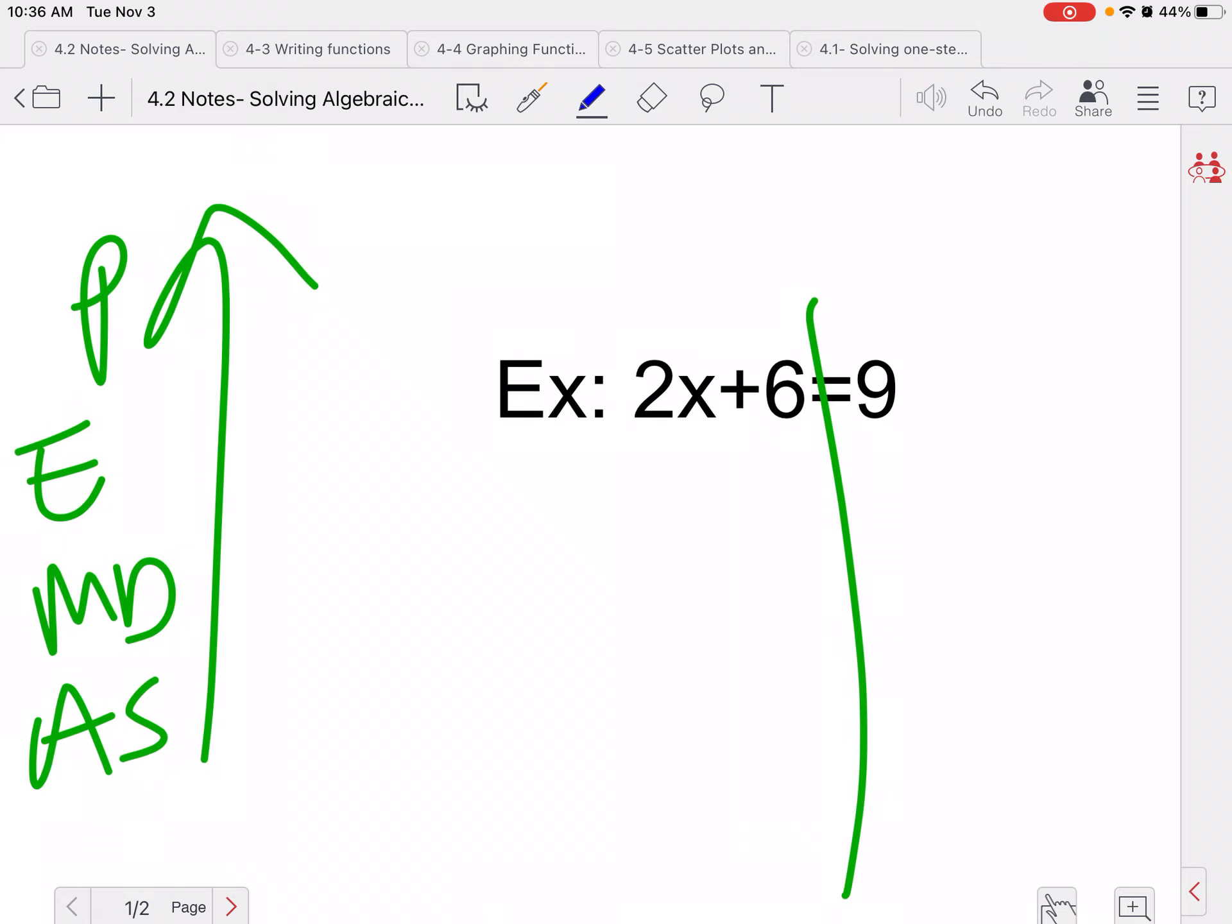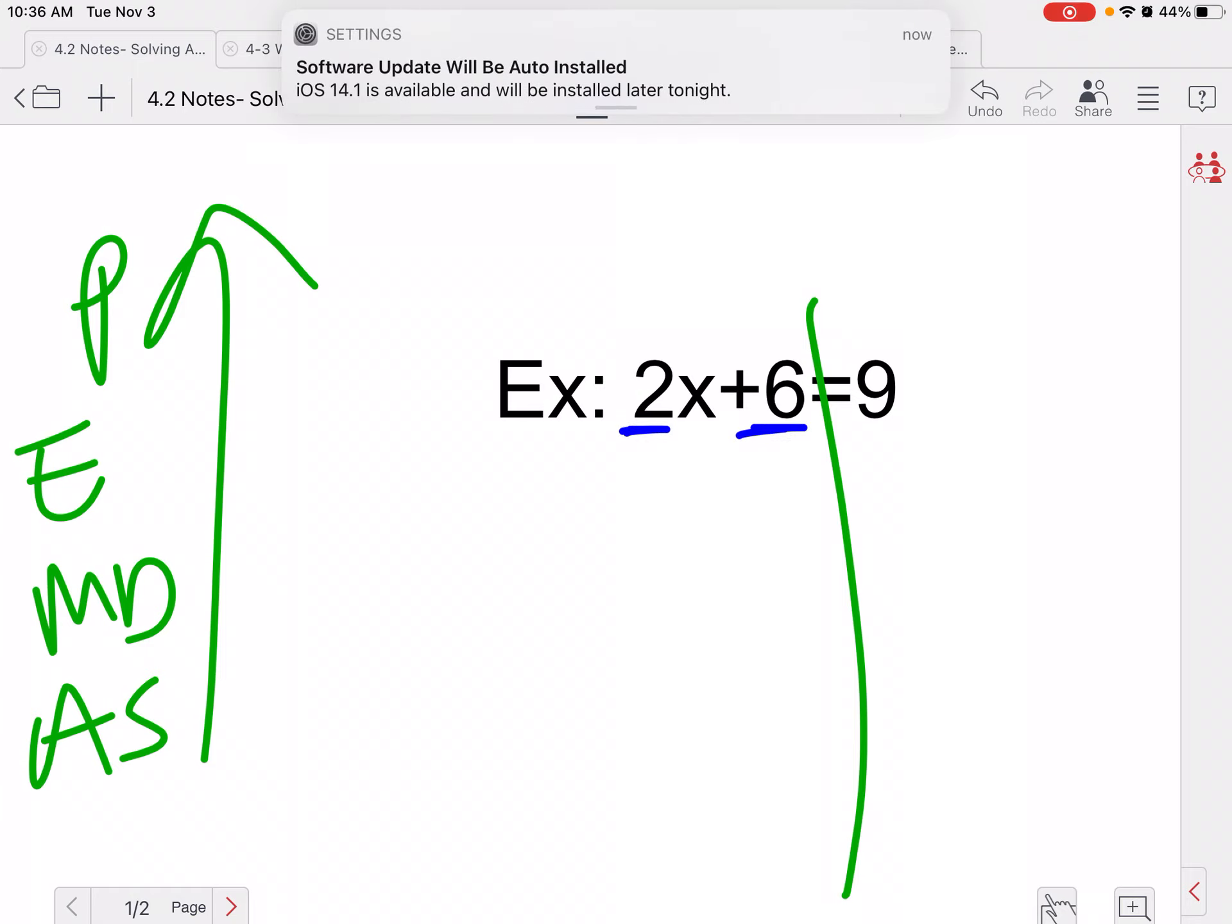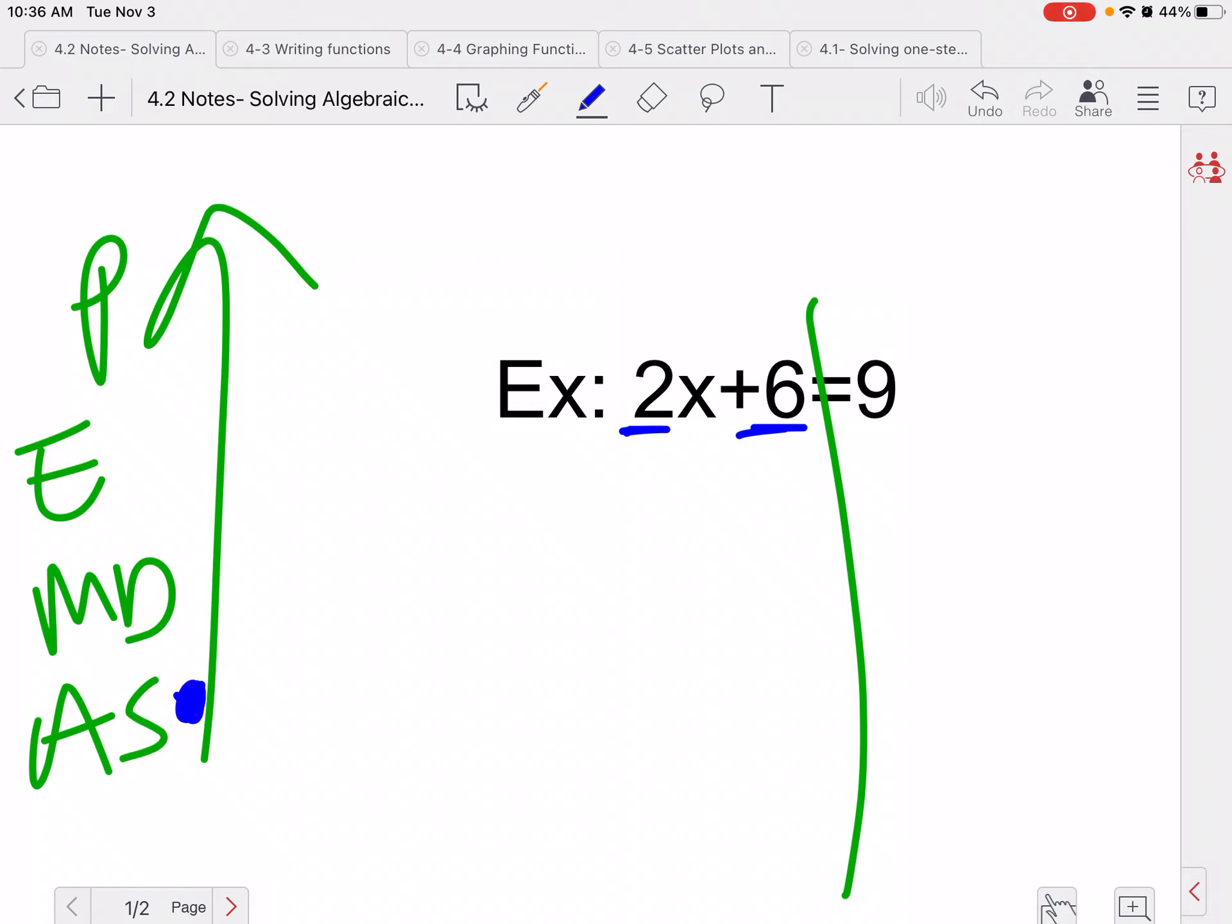My first question to myself is, what is stopping x from being by itself? I see this 2, and I see the 6. The 6 is being added to x, and the 2 is being multiplied by x. Backwards PEMDAS tells me to get rid of that addition subtraction first. So we're going to subtract 6 from both sides because a positive 6 and a negative 6 cancel to be 0. So I bring down my 2x, and 9 minus 6 is 3.